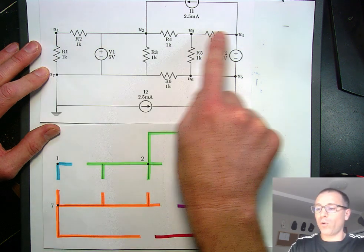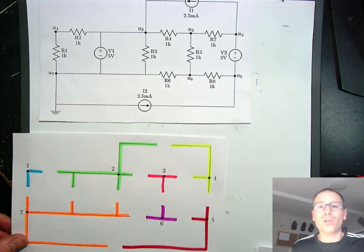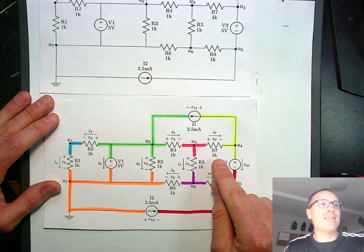1, 2, 3, 4, 5, 6, 7. So when we impose all of those circuit variables and label all the reference directions, we get something that looks like this.